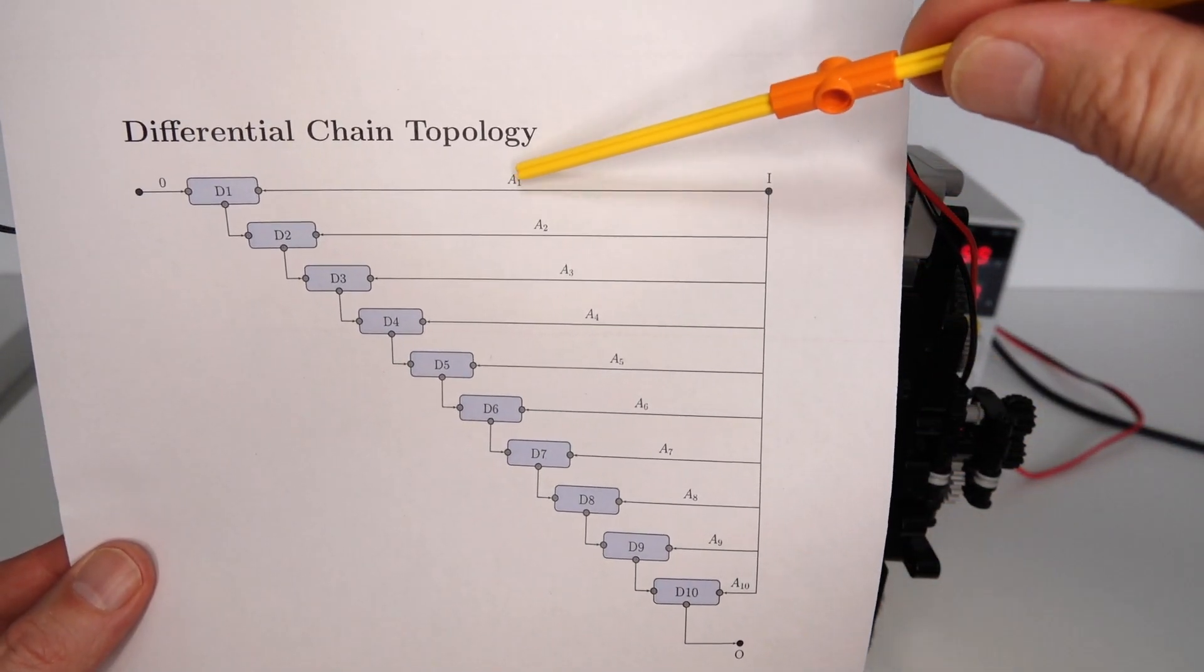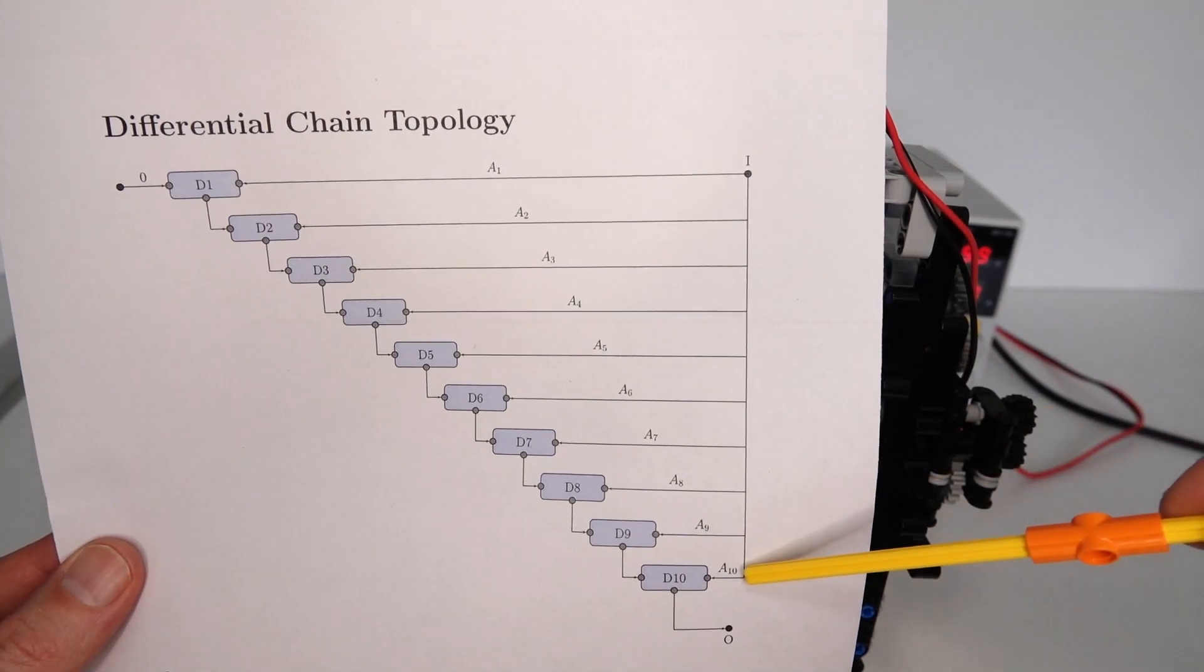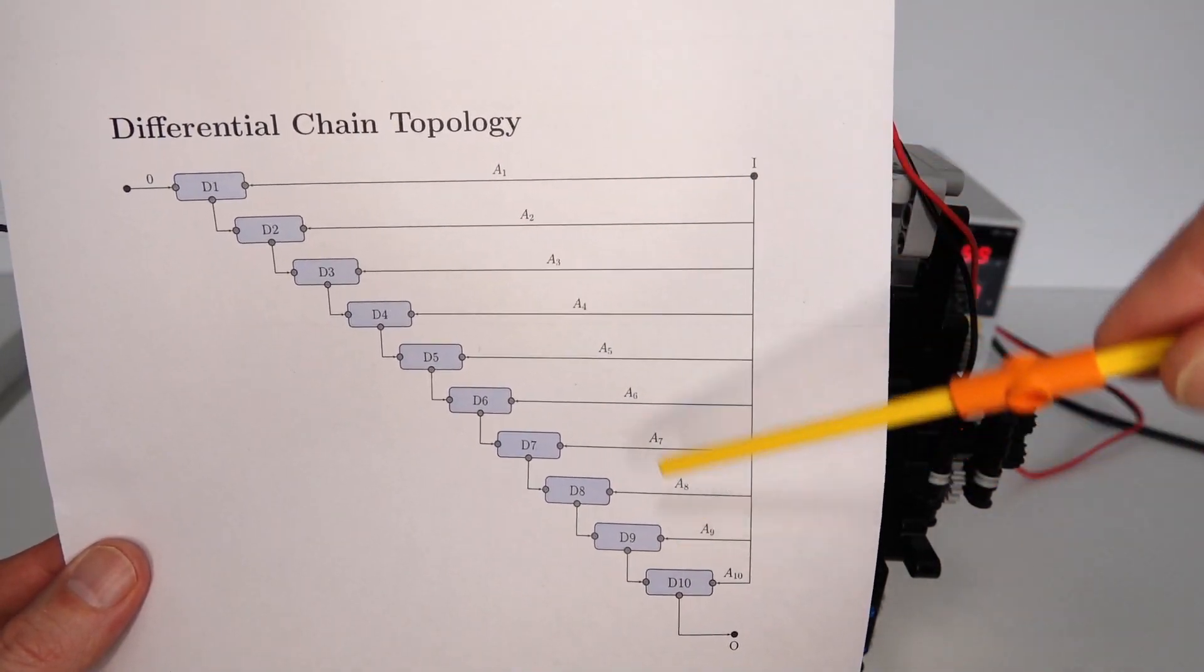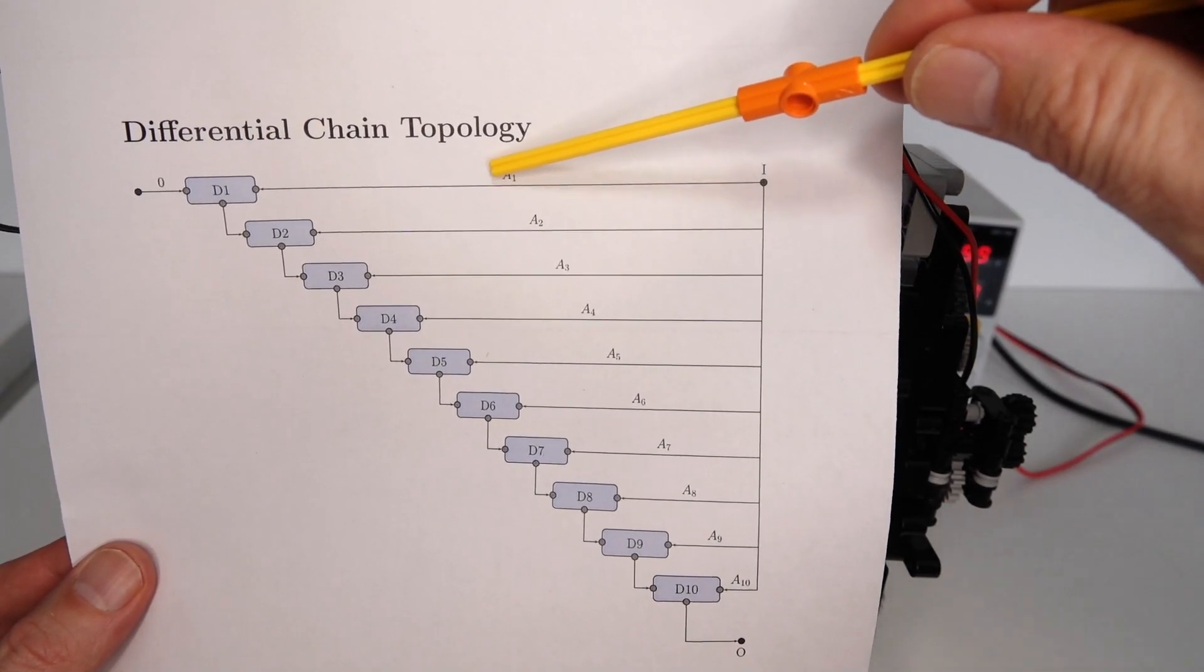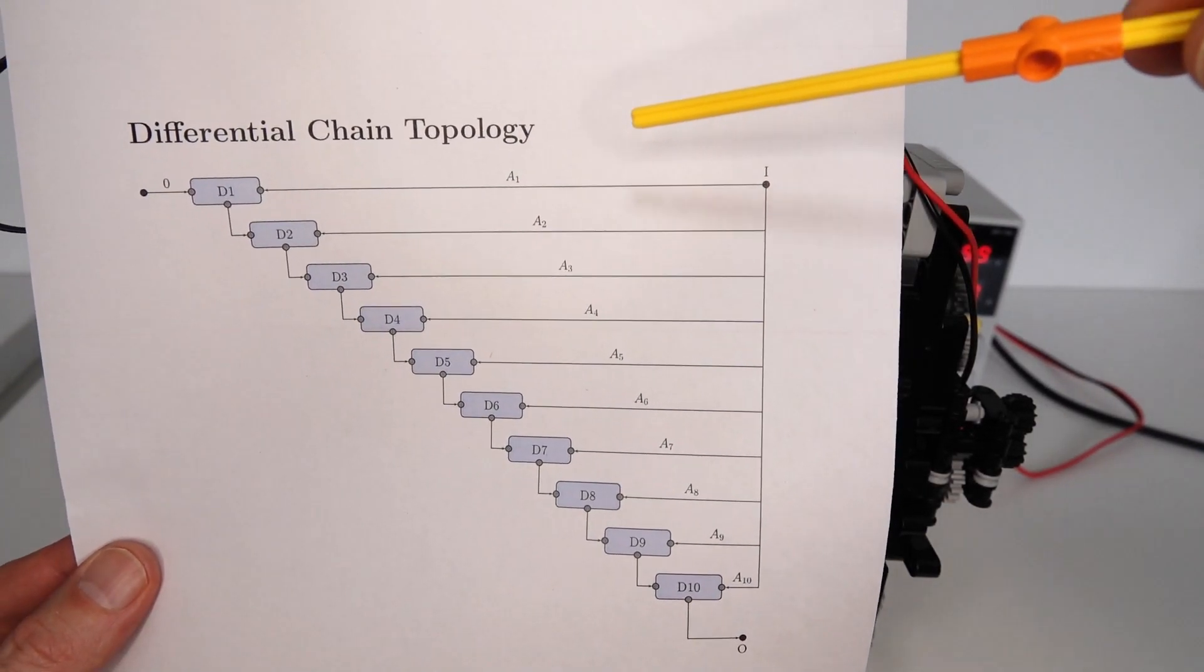These are connected through the input, through the switches, A1, A2, all the way to A10. And these A1 to A10 represent 1s or 0s, so either it's connected to the input or it isn't, depending on the state of the switch.